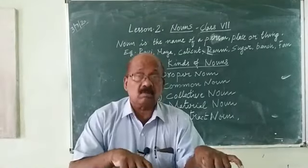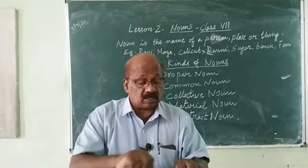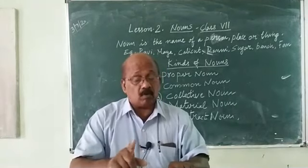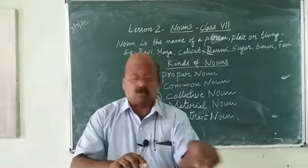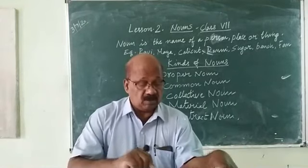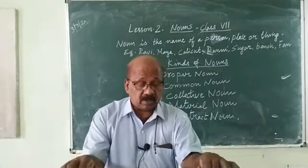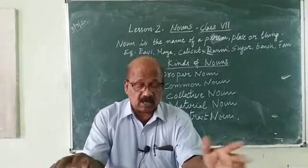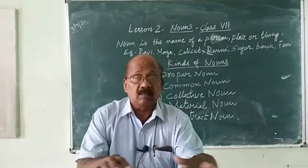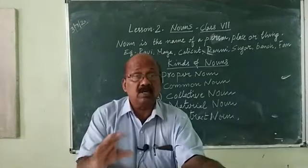Then, coming to material nouns. Material nouns are the names assigned to the materials or substance of which we make things. Example: gold, silver, milk, sugar, water, air, wood, salt, honey, poison, wine, iron. All these are materials, so they are called material nouns.